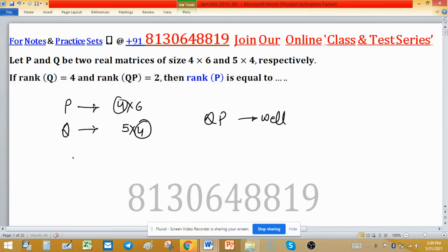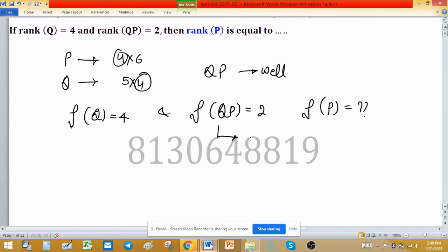Also given that rank, normally denoted by the rho symbol, rank of Q is 4 and rank of QP is 2.